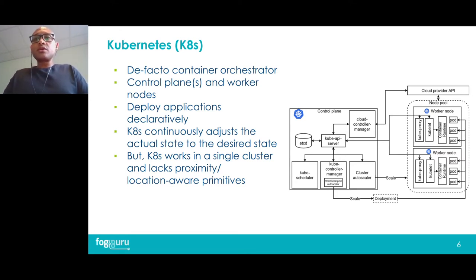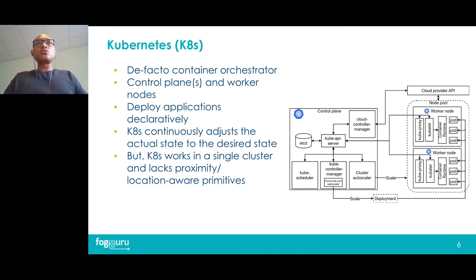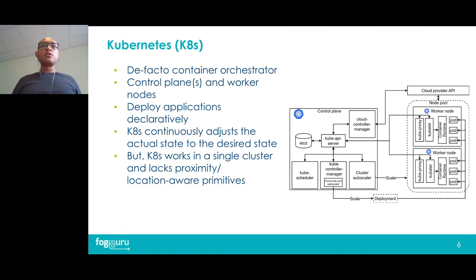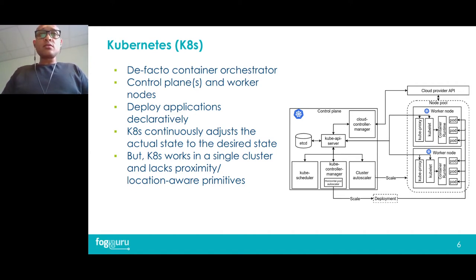The Kubernetes architecture is straightforward. We have a control plane that acts as the brain of the cluster and several worker nodes where applications are actually executed. We deploy applications on Kubernetes declaratively — meaning we tell it what we want rather than how to do it — and Kubernetes controllers continuously monitor the cluster and adjust its actual state to the desired state indicated in our declarative manifest file.